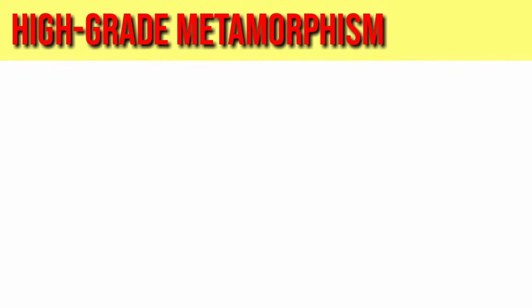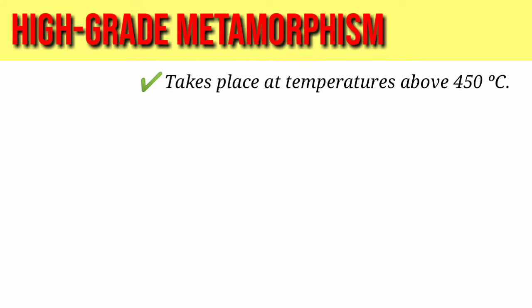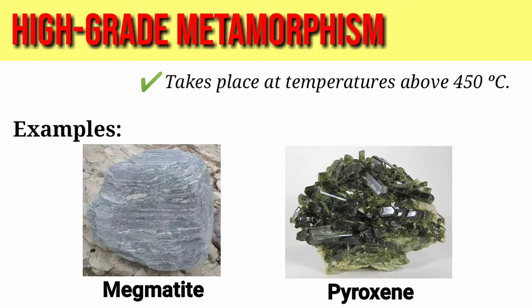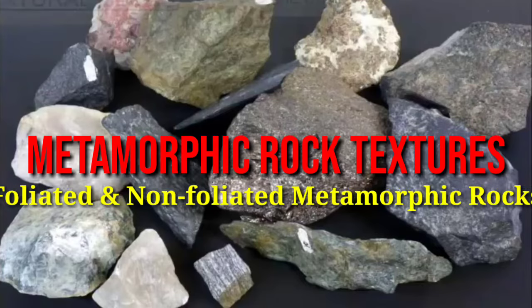High-grade metamorphism takes place at temperatures above 450 degrees Celsius. Examples are non-hydrous minerals such as pyroxene. This picture shows how rocks change due to changes in pressure and temperature in low- and high-grade metamorphism. For example, shale becomes slate, and granulite becomes folded gneiss.